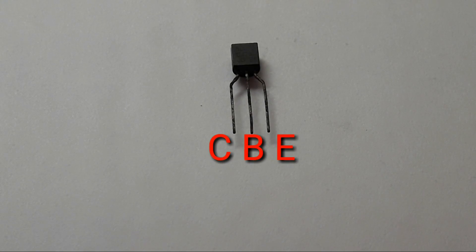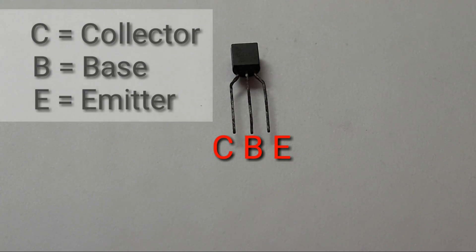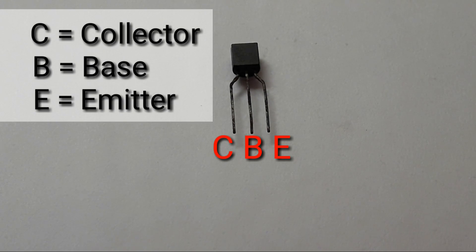When the flat side of the BC 547 transistor is facing you, the first pin is called the collector, the center or second pin is called the base, and the third pin is called the emitter. So it goes as collector, base, emitter.